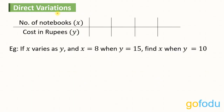Let's talk about direct, indirect and joint variations, starting with direct variations first. If the cost of one notebook is Rs. 15, then the cost of two notebooks will be Rs. 30, and cost of three would be Rs. 45. As the number of notebooks increases, the cost also increases in such a manner that the ratio remains constant.